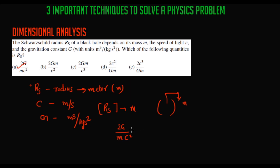We neglect the factor of 2 since it doesn't matter in dimensional analysis. G has units m³/(kg·s²), mass M is in kg, and C² gives m²/s². Working through the units, the seconds squared cancels out and the result is not equal to meters.